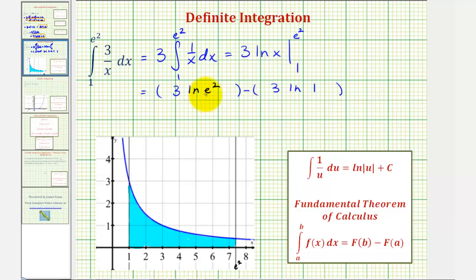Well for three natural log e squared, we can apply the power rule of logarithms, meaning we can take this exponent of two and multiply by the coefficient of three. So that would give us six natural log e, but natural log e is equal to one minus three times natural log one, which is equal to zero. Well again, natural log e is equal to one, so we just have six minus zero, or six.